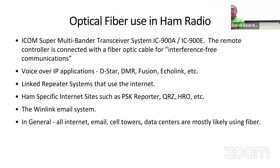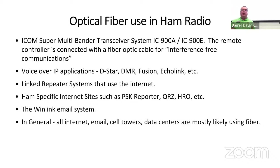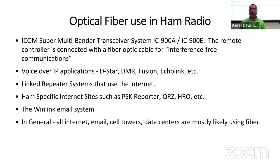Where do we see fiber optics in ham radio? Well, Icom makes a super multi-bander transceiver system, the IC-900A/IC-900E, and the remote controller is actually connected with a fiber optic cable for interference-free communication. Of course, you're going to use fiber anytime you're on the internet — WIRES-X, DMR, Fusion, EchoLink — any kind of linked repeater system that uses the internet is going to be using fiber. All your internet sites, Winlink email, cell towers, data centers — most likely you're going over fiber. So it's everywhere, and you should know how it works.